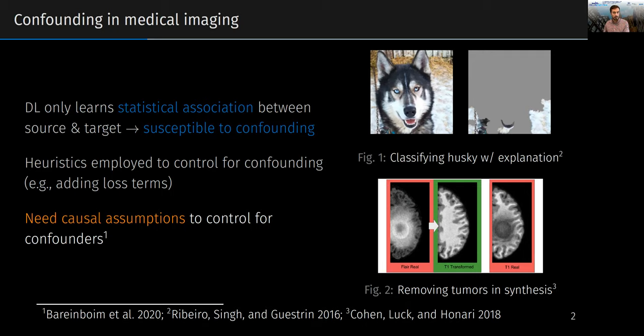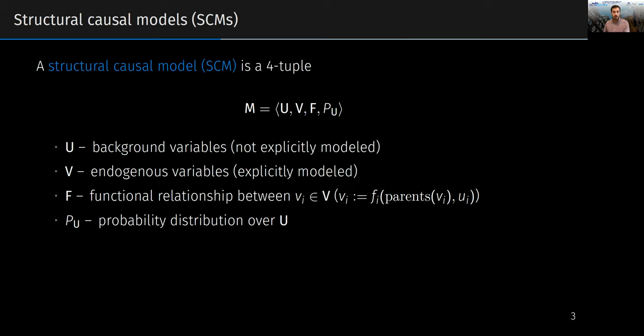One way to do that, which makes the causal assumptions explicit and transparent, is with a causal graphical model called a structural causal model, or an SEM. Formally, an SEM is a tuple containing background variables, which are outside the model, endogenous variables, which are the covariates being explicitly accounted for, a set of functional relationships relating the background and endogenous variables, and a probability distribution over the background variables to account for uncertainty.